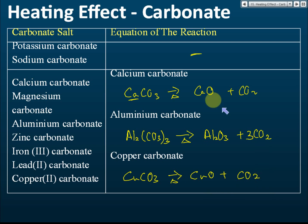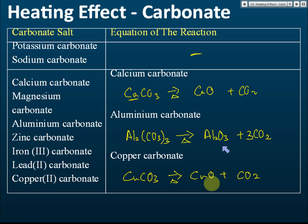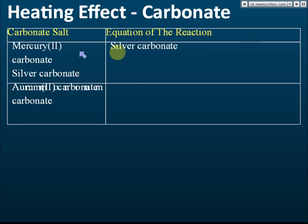Since one of the products is the oxide, you need to know the colors of the oxides. Calcium oxide is white, aluminium oxide is white, copper oxide is black, and iron(III) oxide is brown in color.